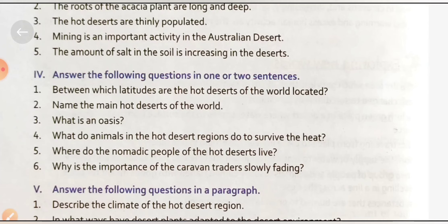Next question: 'Where do nomadic people of the hot desert live?' The nomadic people do not stay in one place. They move constantly from one place to another in search of food and water for themselves and their livestock. They do not have permanent homes and live in tents made from wool or animal skins.